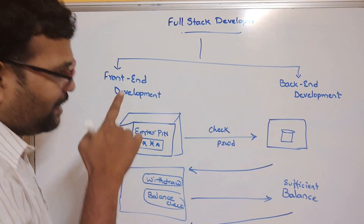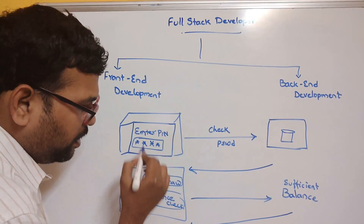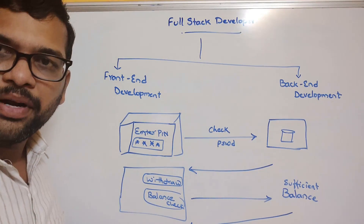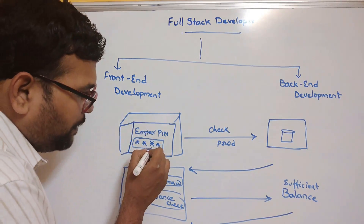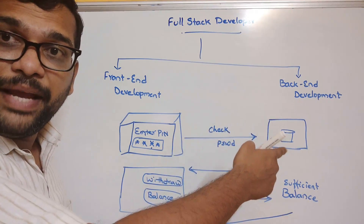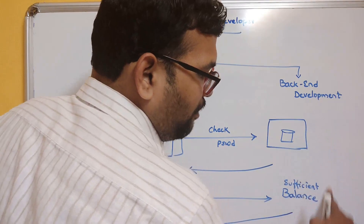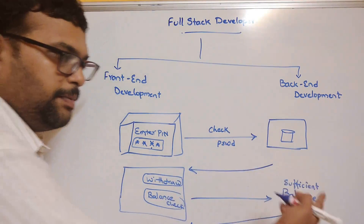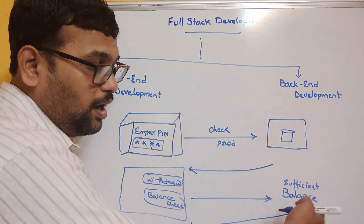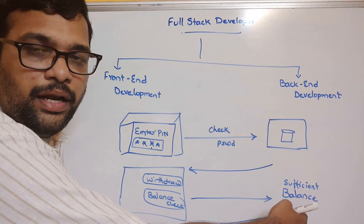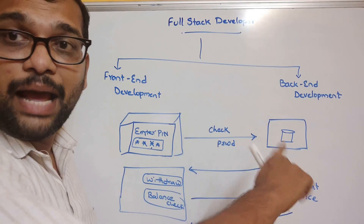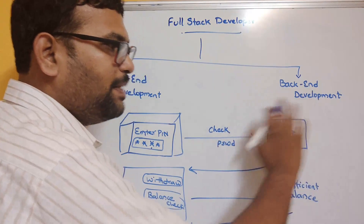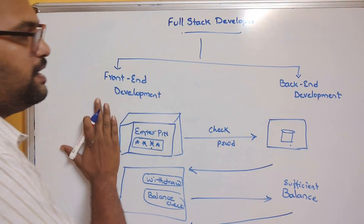If sufficient balance is there, it will return the amount and automatically debit it from the balance — all this happens in the back-end. So whatever elements are visible to the user — entering the PIN, the withdraw services, balance check — that is called the interface, the front-end development. The verification of PIN, checking sufficient balance, processing and sending the amount — all this happens in the back-end. The database and user interface work together: the client sends a request and the server gives a response.